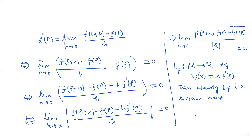Geometrically, you can think of it this way: at a point, the derivative corresponds to the tangent line, so you are approximating the curve near p by the tangent line. In higher dimensions, this linear space is given by a linear transformation. Using this idea, we can define the derivative of a function from an open subset of Rn to Rm via a linear transformation.